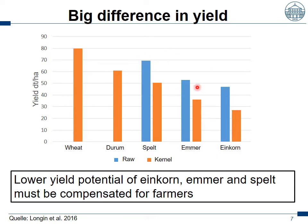Then the miller has to de-hull them. At the end the kernel yield of spelt was 50 decitons as compared to 80 decitons of bread wheat. Emmer was around 35 and einkorn 27. That means einkorn, emmer, and spelt have a considerably lower yield per hectare than bread wheat.